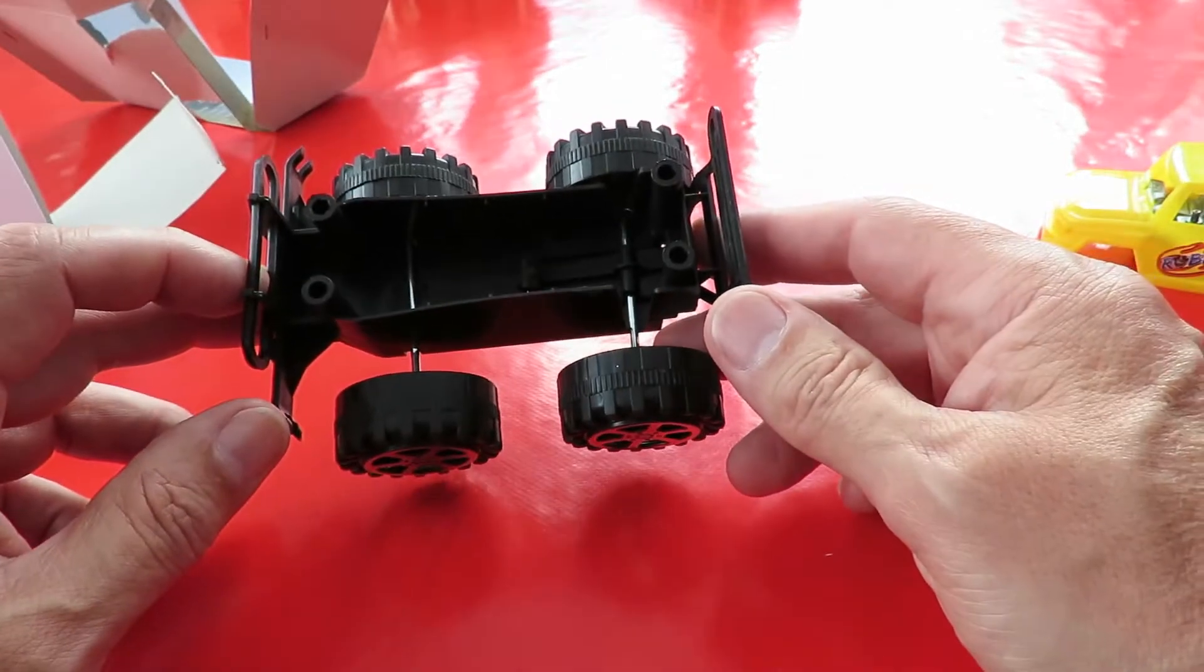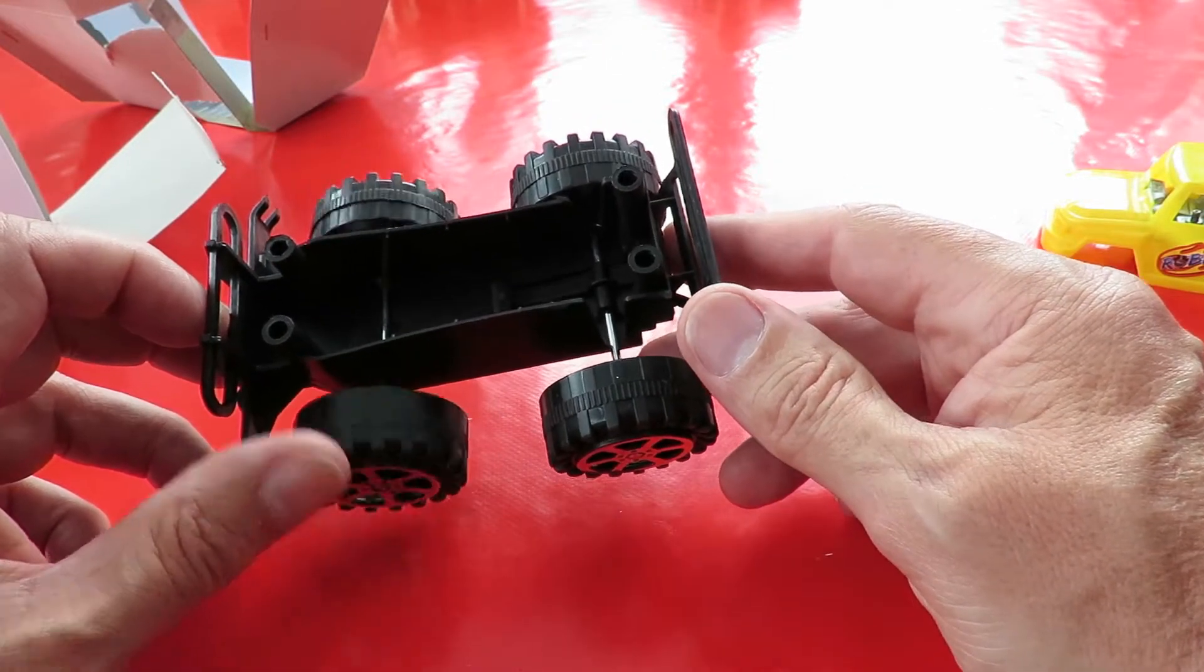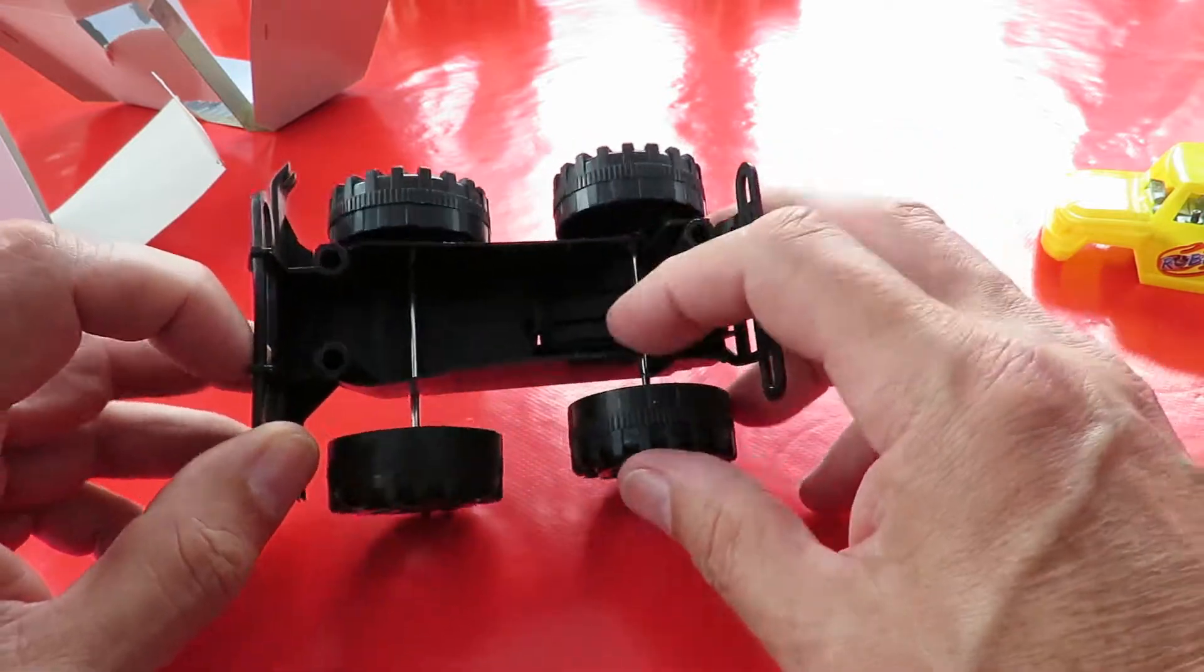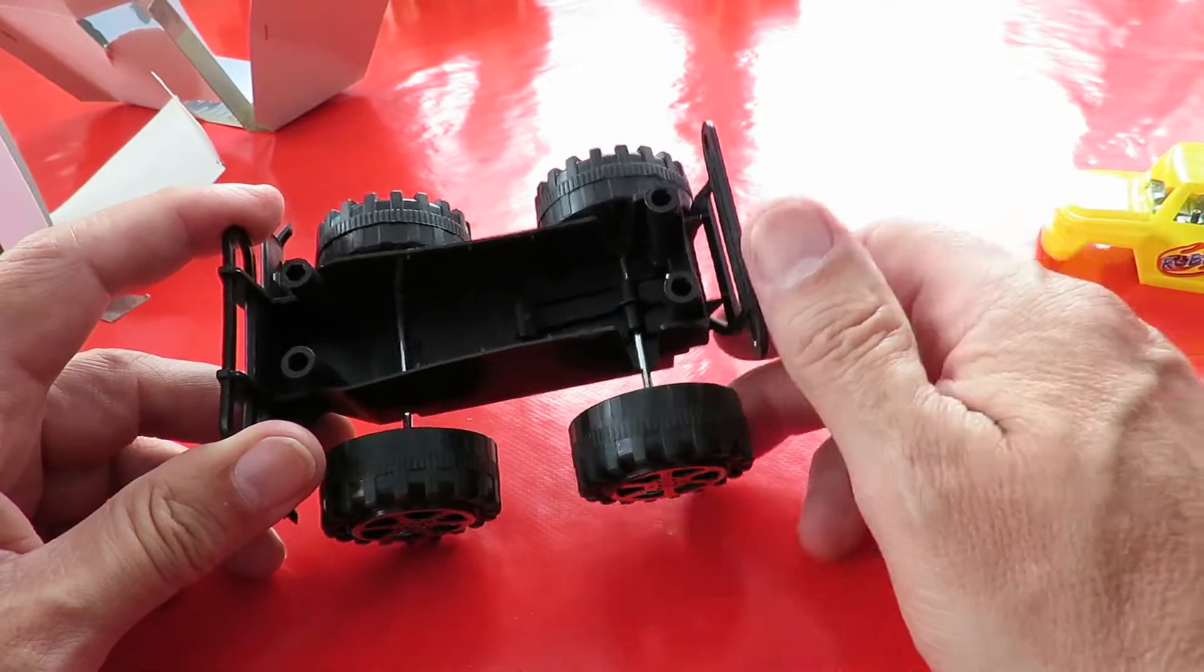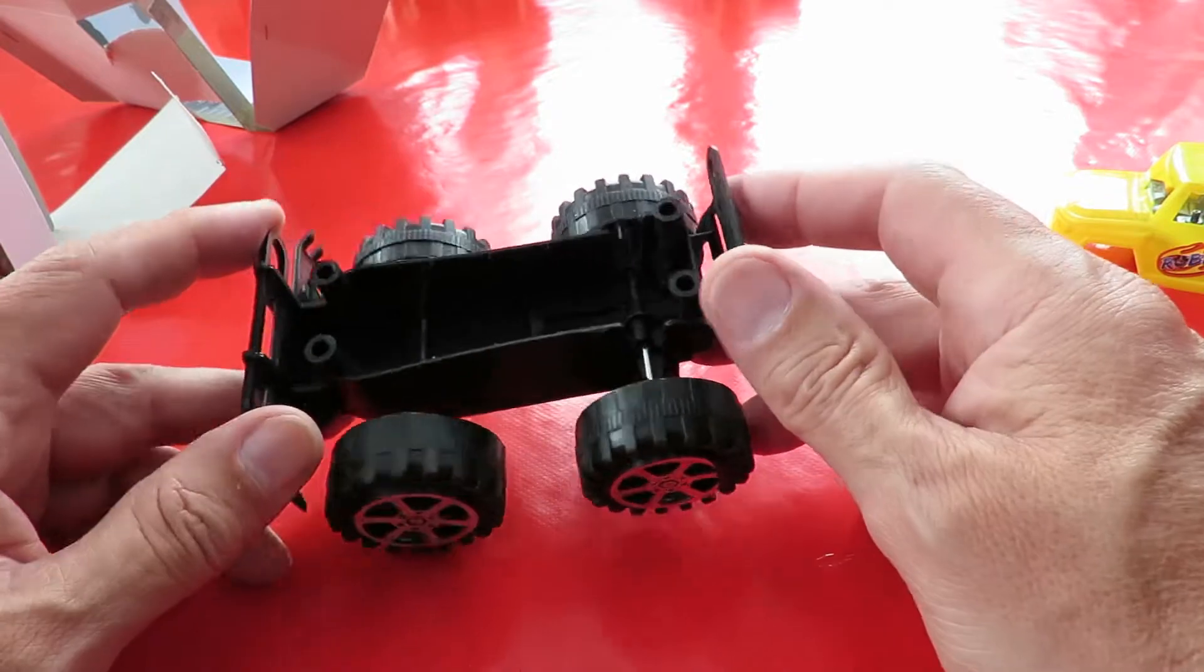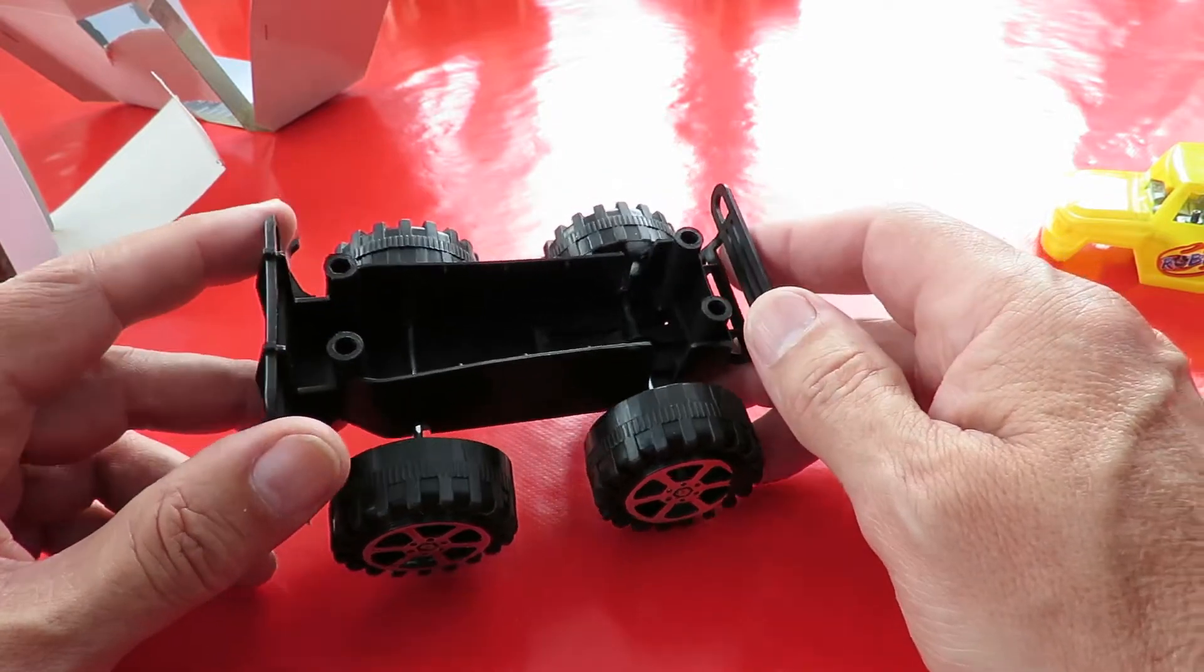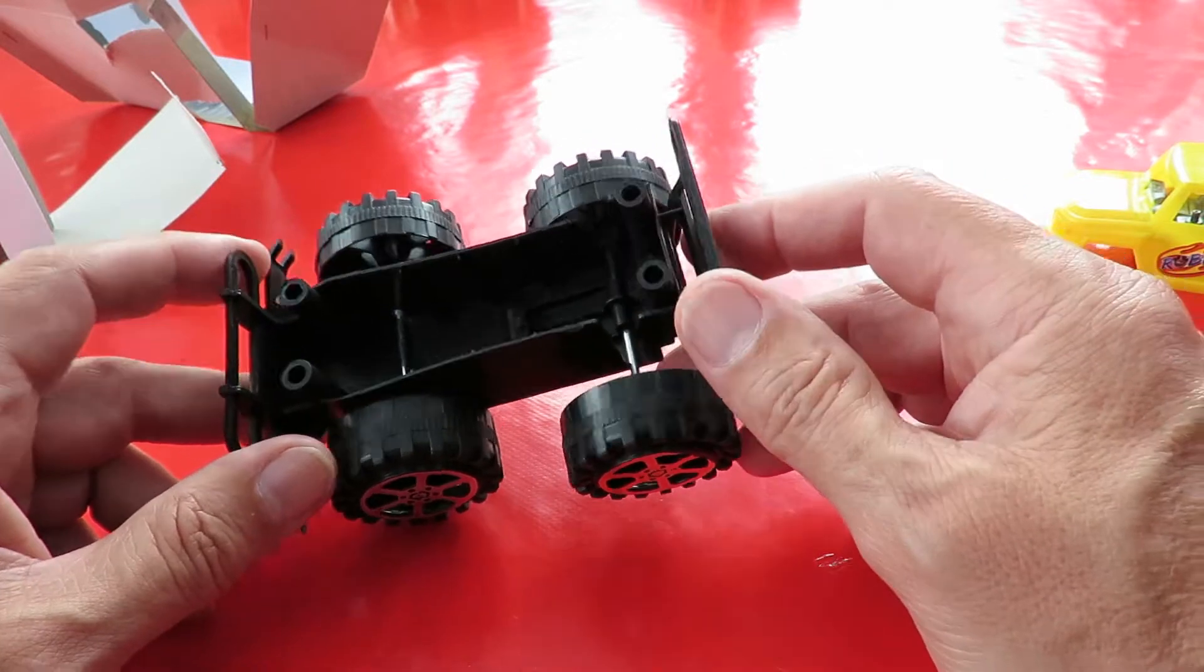What can we do with this? We can probably stick a gear on there and make it electrically powered. Or we might be able to attach a rubber band somewhere and make it rubber band powered.